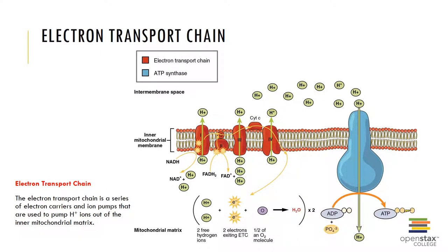The electron transport chain is an aerobic process which occurs on the cristae, or folds, of the mitochondria. The coenzymes NAD+ and FAD deliver the hydrogen atoms and electrons from glycolysis and the citric acid cycle to the inner membrane of the mitochondria, called the cristae, for participation in the electron transport system. Within the cristae, there are numerous embedded proteins called cytochromes. The hydrogen electrons are passed from one cytochrome to another in a series of redox reactions, and as the electrons are passed, molecules of ATP are produced by oxidative phosphorylation.